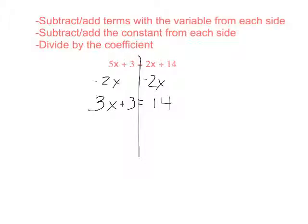My next step is to subtract the constants from each side. I have 3x plus 3 equals 14, so I want to get rid of that plus 3. The opposite of add 3 is subtract, so I'm going to subtract 3 from both sides. The 3x is still there — I took away that 3 so it's gone, and 14 minus 3 is 11.